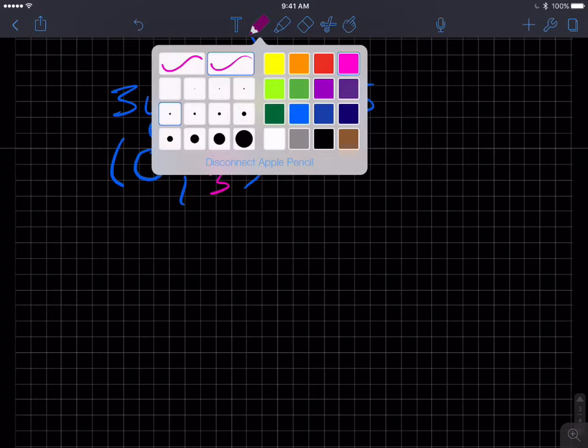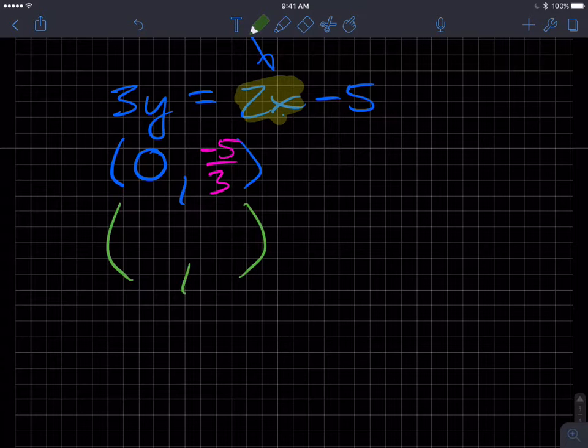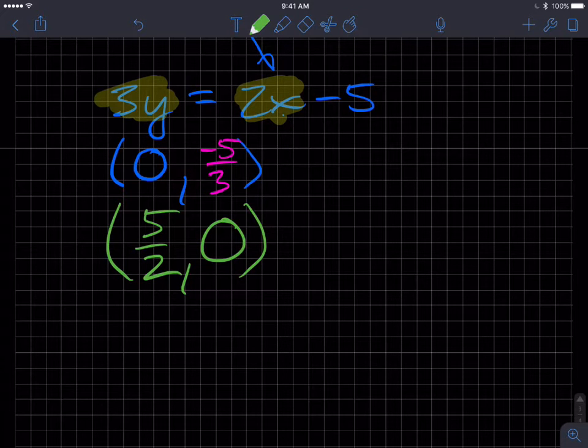And then another point that we could easily determine, because the number 0 is easy to work with. So what if I put a 0 in for y? If I put a 0 in for y, this whole thing goes away. And I'm going to add 5 to both sides and divide both sides by 2. So I'm going to get a 5 halves.